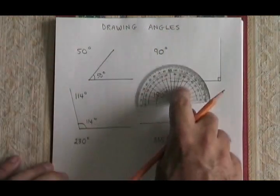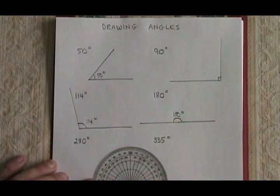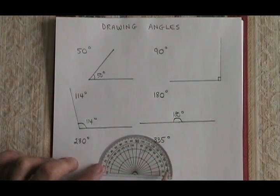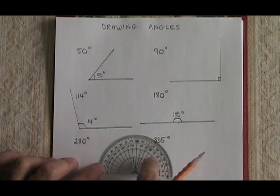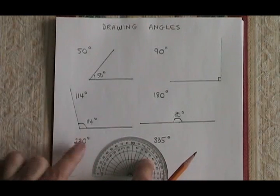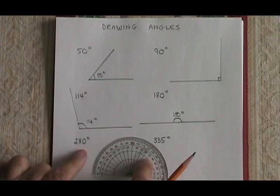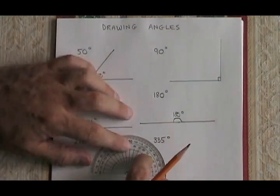Where it gets a little bit tricky is that the protractor's numbers only go to 180 and then they stop. But some angles you may be asked to draw are bigger than 180. In order to draw this 230 degree angle,